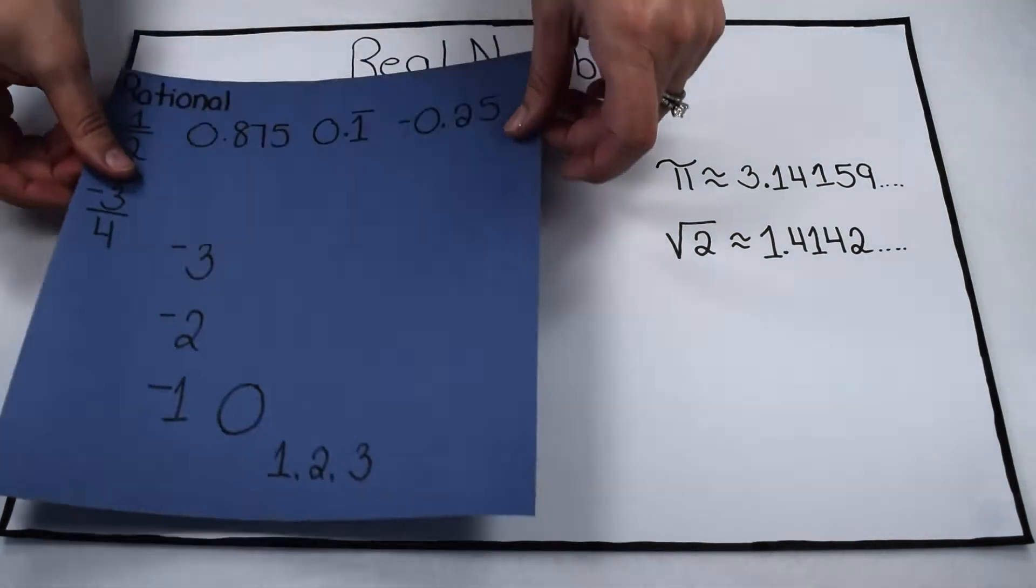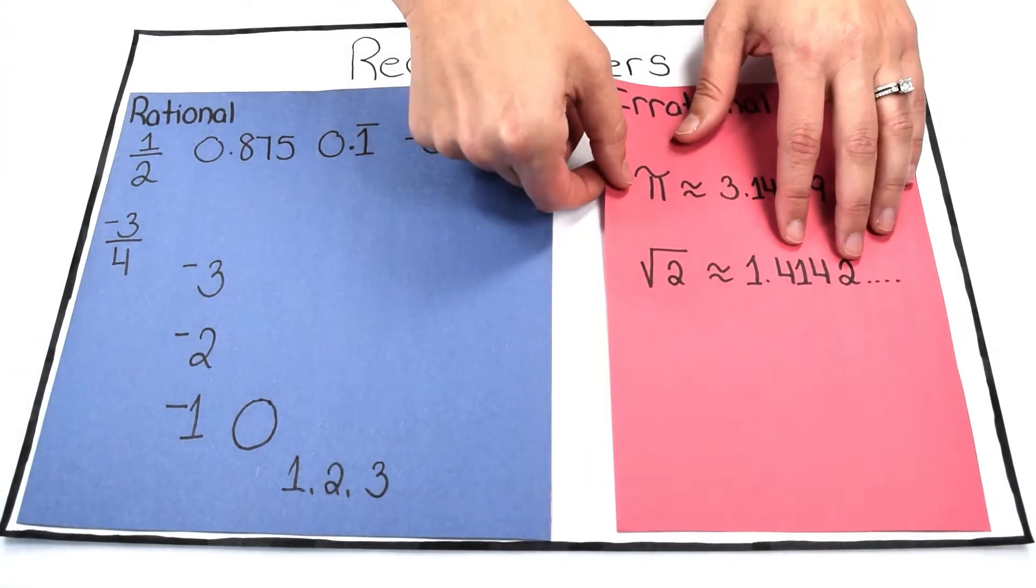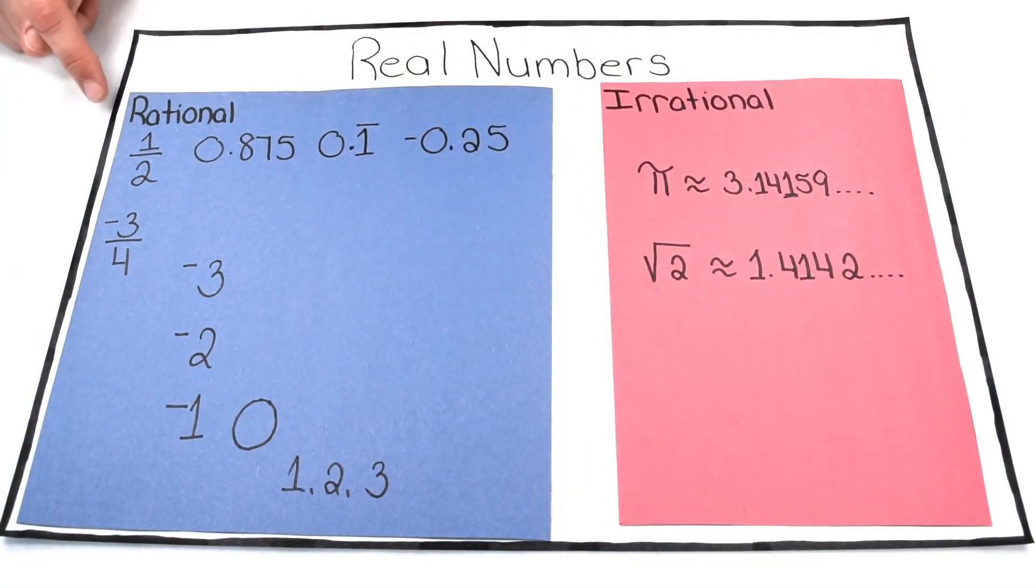Within real numbers, we can break those down into two categories: rational and irrational numbers. Rational numbers are any number that can be written as a ratio of two integers. This includes whole numbers, negative numbers, fractions, terminating, and repeating decimals.